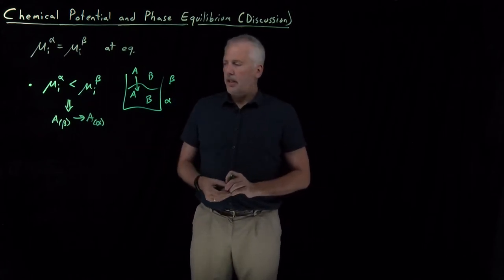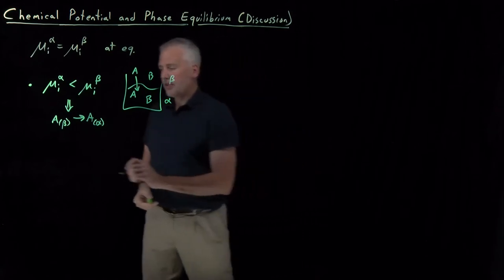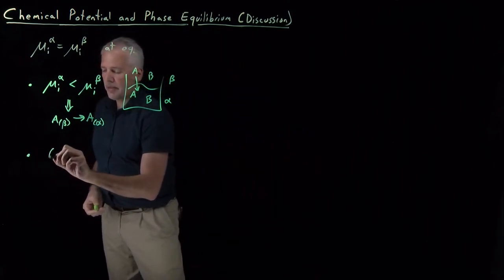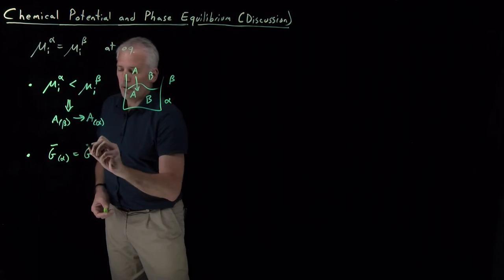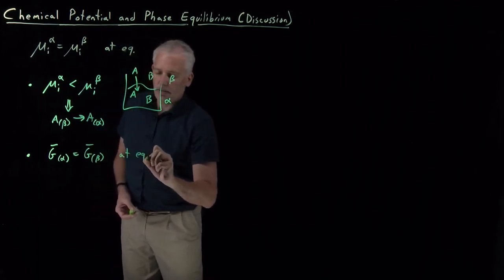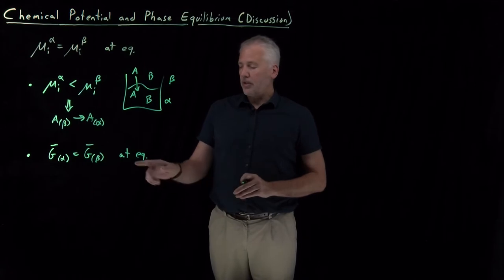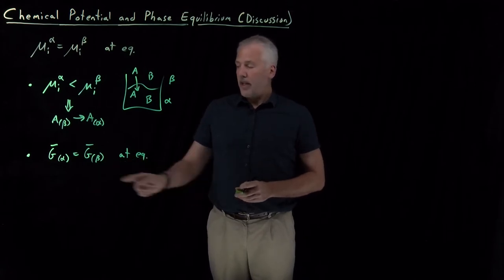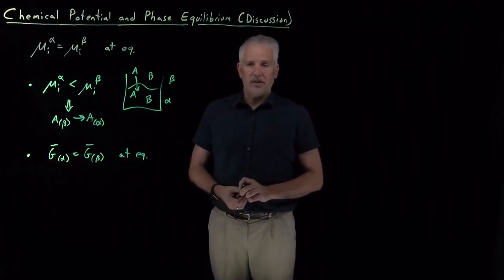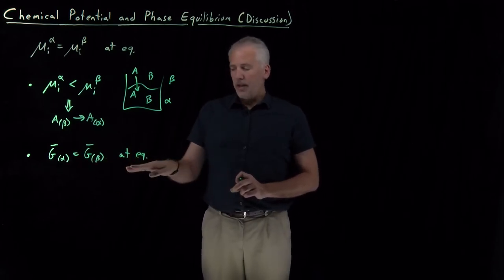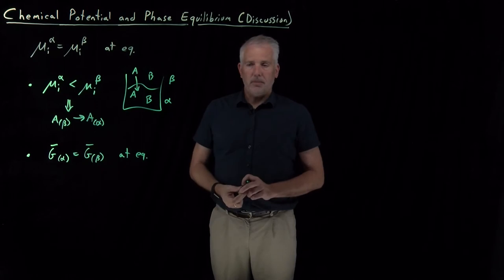That should sound familiar. This statement about chemical potentials — remember, chemical potential is partial molar Gibbs free energy — should sound familiar because we've seen before that the molar free energy in phase alpha equals the molar free energy in phase beta at equilibrium for a single component system. If we're just talking about melting, boiling, evaporating, or subliming of a single component, the molar Gibbs free energy of the two phases are equal on the phase coexistence lines of a phase diagram. This is the equivalent statement about the partial molar Gibbs free energies — the chemical potentials — in a multi-component system.